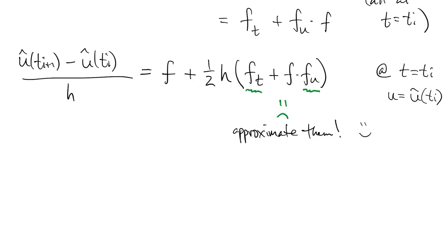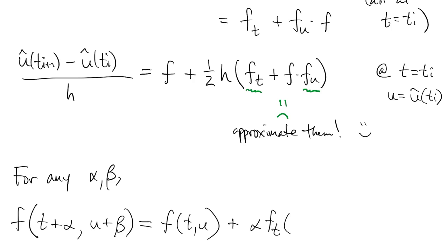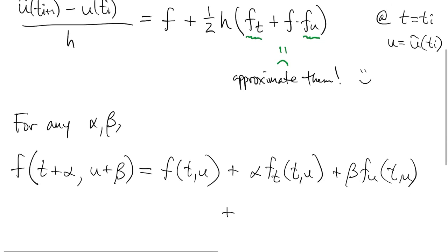As long as we get the second order accuracy overall, we'll still be ahead of Euler. We accomplish this by writing out the start of a two-variable Taylor series for f. We only need the first partial derivatives, so we lump together all the higher order stuff.